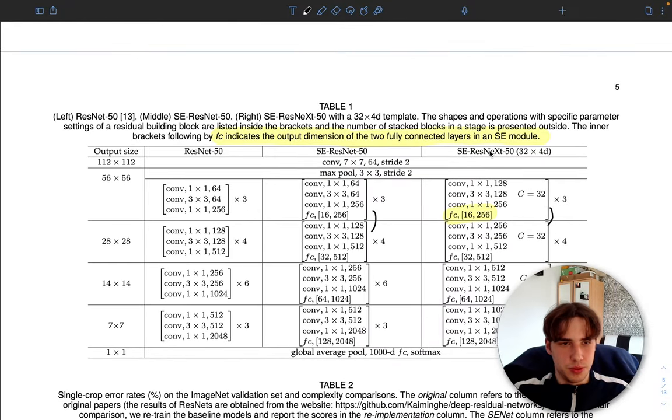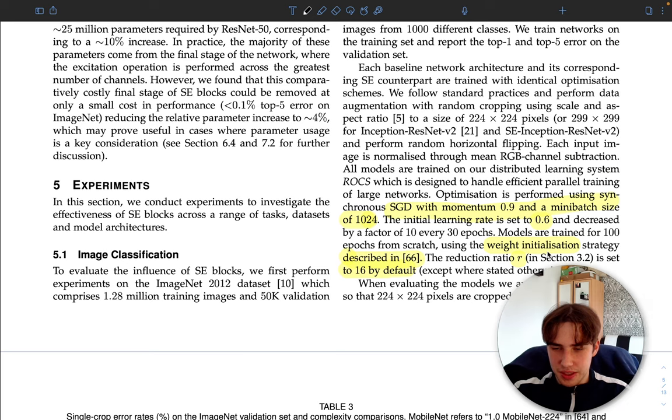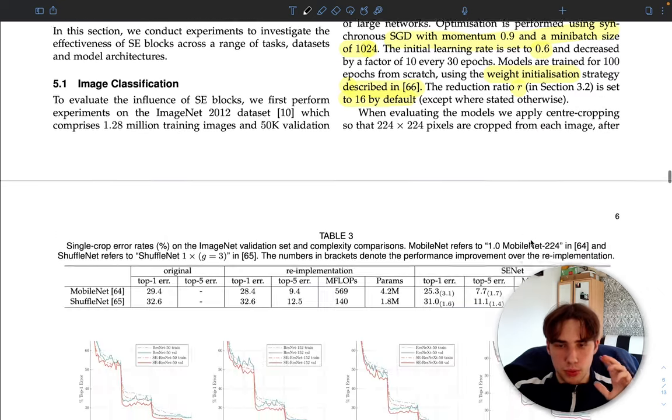it to the ResNet, so we're going to add it on top of the ResNext that we coded in the last video. If you haven't seen it, go check it out. We add this squeeze and excitation block on top of every block we have. As you can see, they state FC indicates the output dimension of two fully connected layers in the SE module. A few words on implementation: they use SGD with momentum 0.9, huge mini-batch 1024, and initial learning rate set to 0.6.